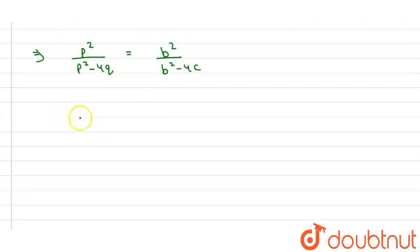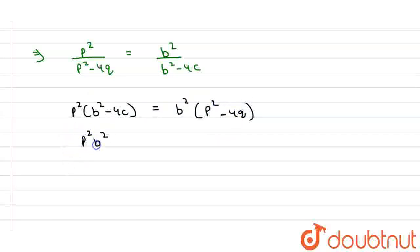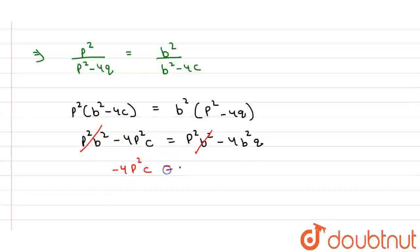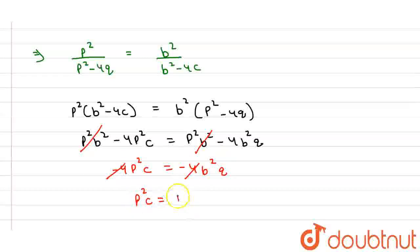Now we do cross multiplication: P²·(B² - 4C) = B²·(P² - 4Q). The P²·B² terms cancel out on both sides, giving us -4P²C = -4B²Q. Cancelling -4 from both sides, we get P²C = B²Q. Hence proved. Thank you.